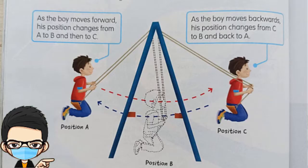Then, as the boy moves backward, his position changes from C to B and back to A.